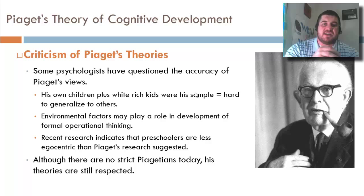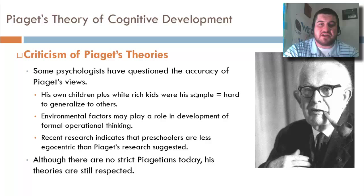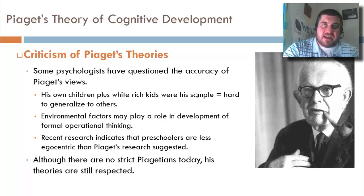Criticisms of Piaget's theories include questions about accuracy. He used his own three children for much of his data, and his other samples consisted of children from higher socioeconomic backgrounds who were all white — making it hard to generalize those findings. Recent research also shows that environmental factors play a major role in development, and that four- and five-year-olds have a deeper understanding of their own thought processes and are less egocentric than Piaget suggested. His theories are 60 to 70 years old and used today mainly as a starting point.